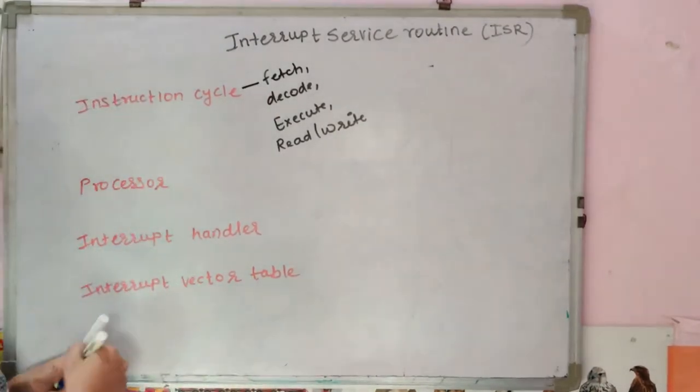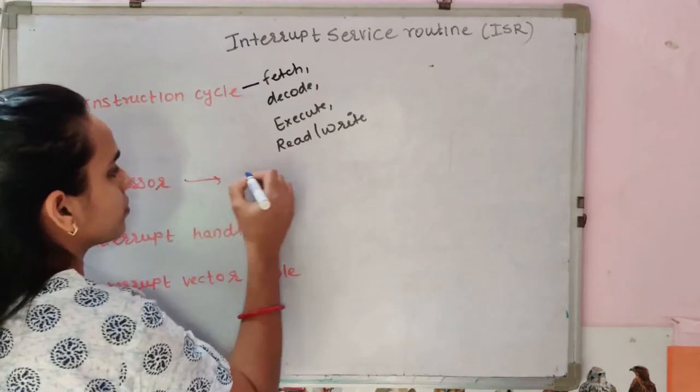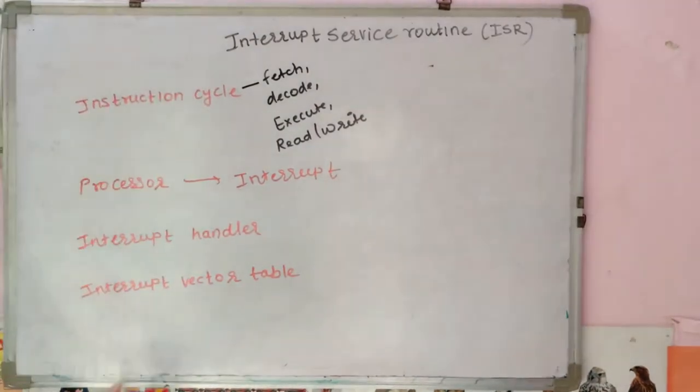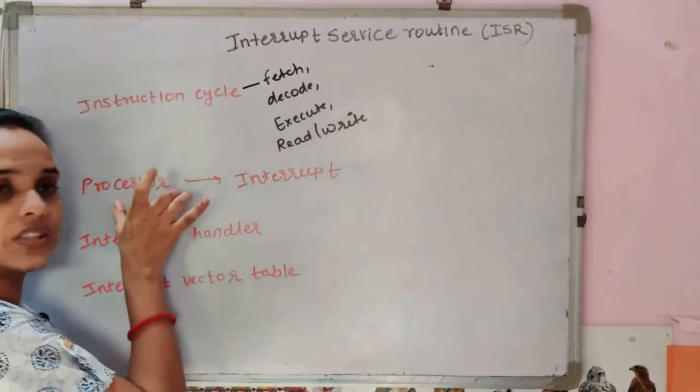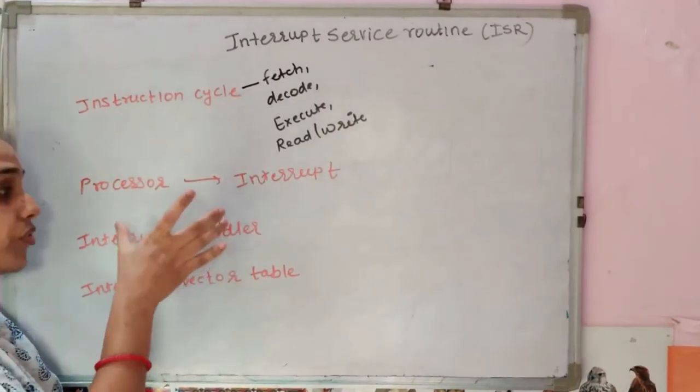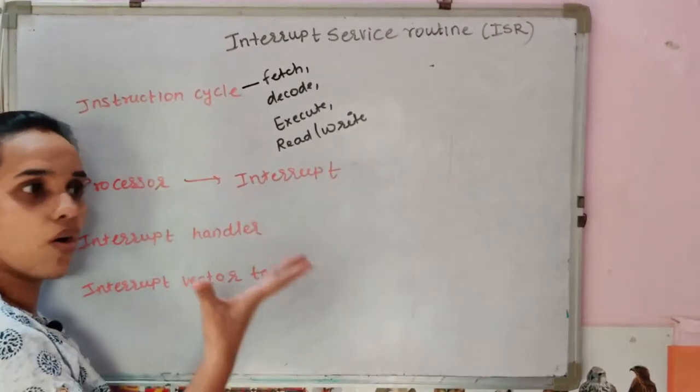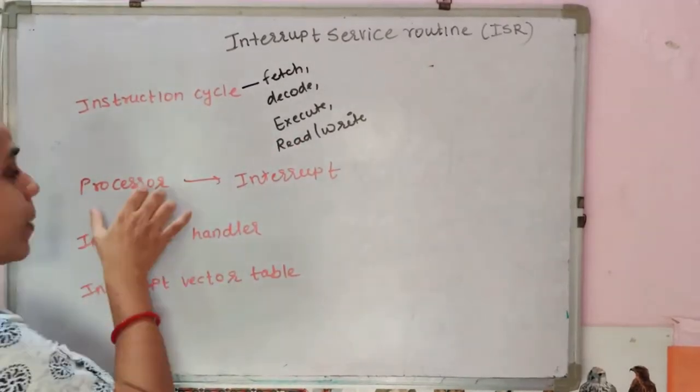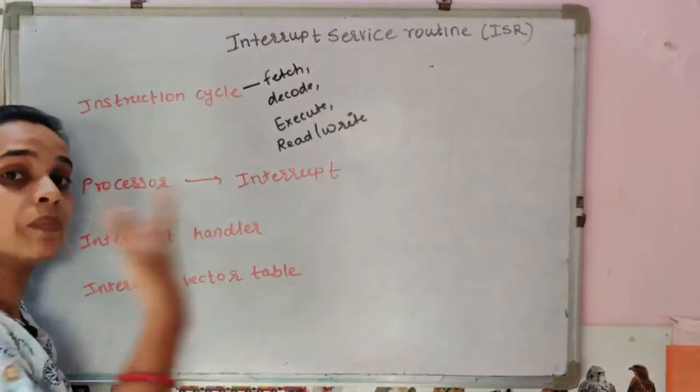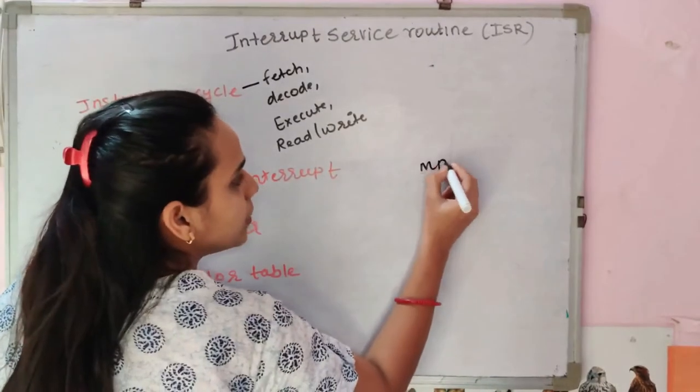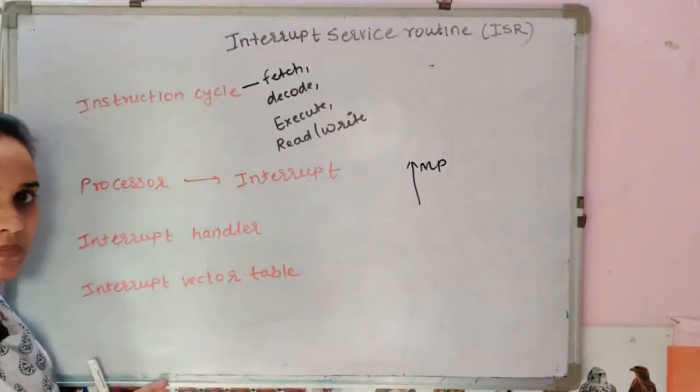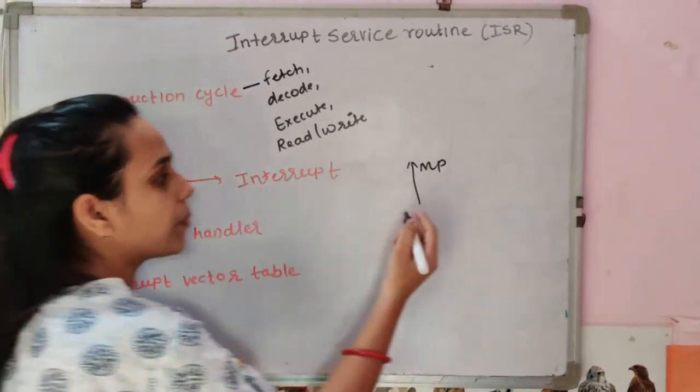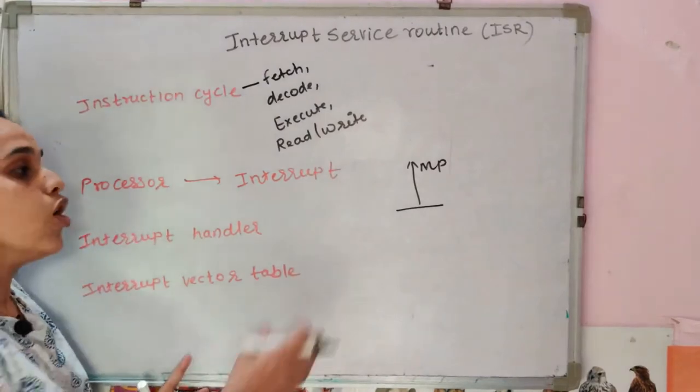Now, in case the interrupt occurred here, the processor will know that there is an interrupt signal generated here. So what will your main program do? It will stop.